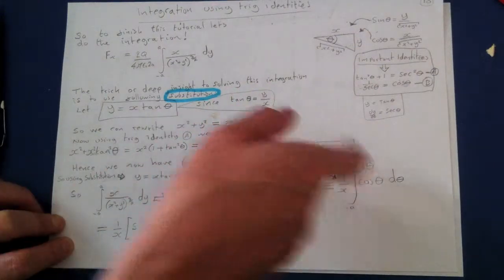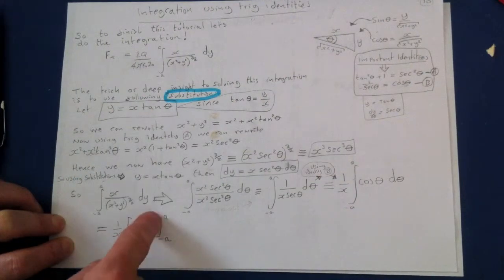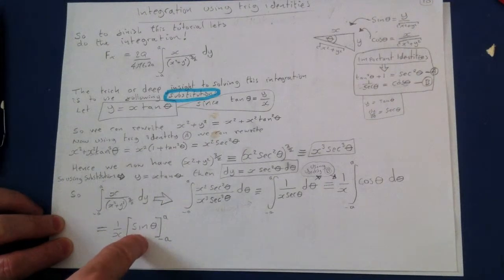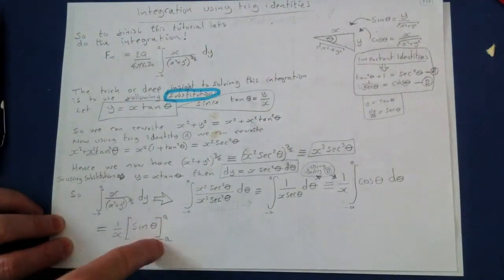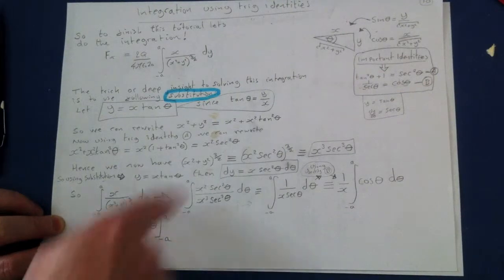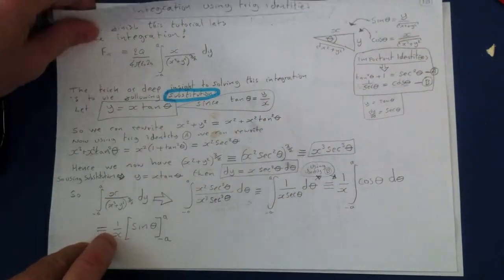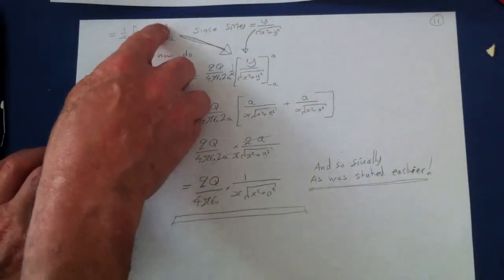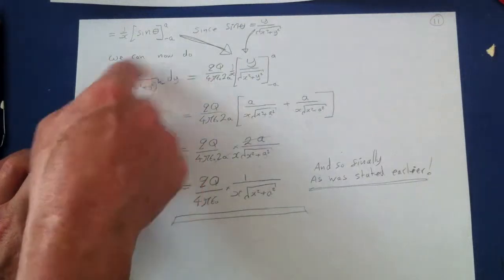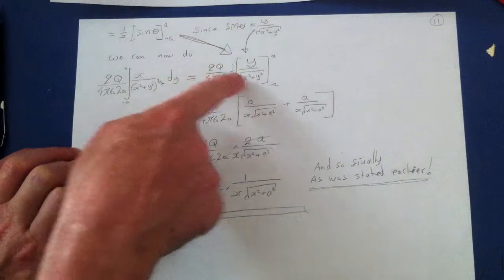We know the integral of cosine is sine, so we write (1/x)[sin(θ)] between a and −a. But we need to express sin(θ) back in terms of y, since a is the y limit. From the triangle, sin(θ) = y / √(x²+y²), so we substitute that back in, giving (1/x)[y / √(x²+y²)] evaluated between a and −a.